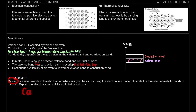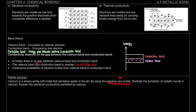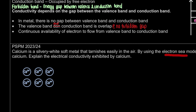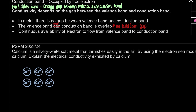To draw the electron sea model, we want many atoms. I'm going to draw my positive ions for calcium — minimum six ions. So I have six positively charged calcium ions. For each calcium atom, it donates two electrons, so for each ion we have two electrons. With six ions, we need a total of 12 electrons in the sea.